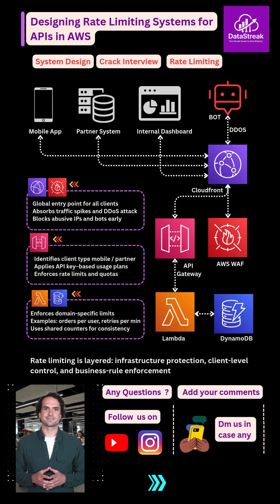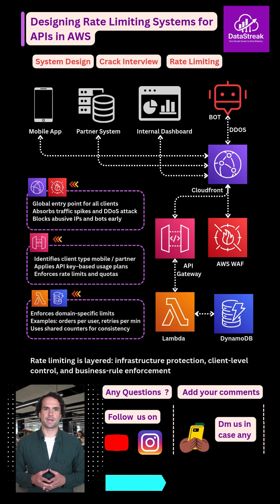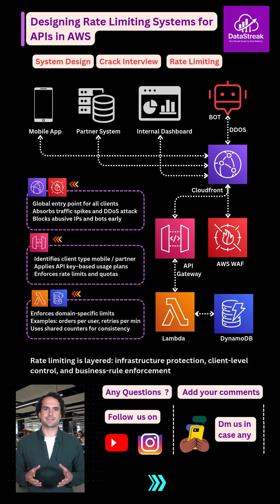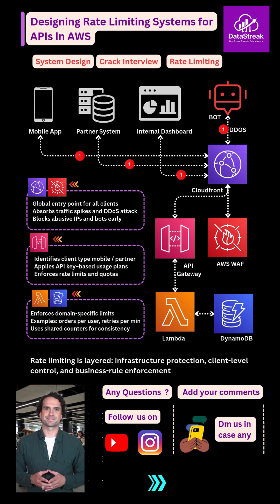Let me walk you through how rate limiting works for a public API on AWS. When a client sends a request, it first reaches AWS CloudFront.